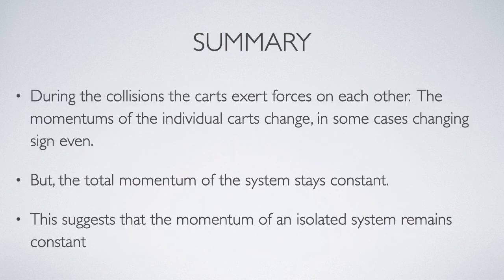So what we're seeing here is that interactions between objects lead to changes in their momentum. These changes can include both magnitude and direction changes. But the total momentum of these interacting objects stays constant.